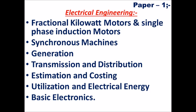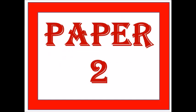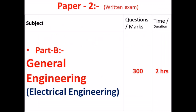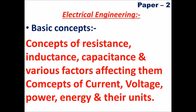Basic Electronics is one of the easiest subjects for Electrical Engineering candidates. Next is Paper 2. Here are the details about Paper 2 — this is one of the main papers for 300 marks. Part B is General Engineering, Electrical Engineering. Paper 2 is nothing but Written Examination and the duration is 2 hours.